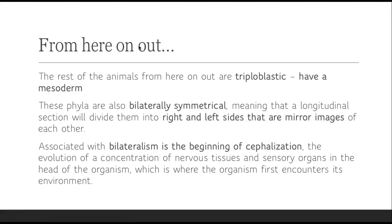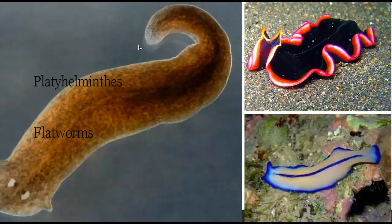Associated with bilateralism is the beginning of cephalization. What's cephalization? It's basically the evolution of a concentration of nervous tissue and sensory organs in the head. If you look, we've got eyes and a brain up there — that's cephalization. The organism will first encounter its environment and know what's going on around it. So we're getting the beginning of having a head with a brain and eyes.